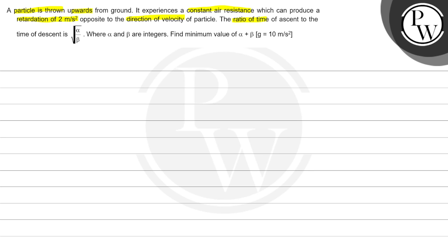The ratio of time of ascent to the time of descent is root alpha divided by beta where alpha and beta are integers. Find the minimum value of alpha plus beta where g is equals to 10 meter per second square.